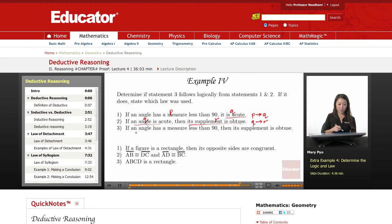If an angle has a measure less than 90, here's my P, right? So here's P. All of this is P. Then its supplement is obtuse. This is R. So this, my third statement was P to R.